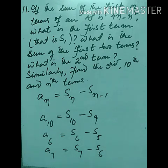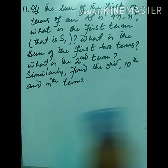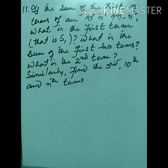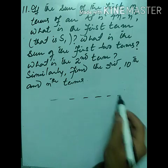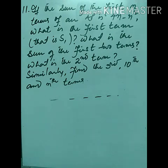Please remember this. Now let me read the question: if the sum of the first n terms of an AP is 4n − n², what does this mean? There is an AP, and for this AP the sum of the first n terms is given by 4n − n².